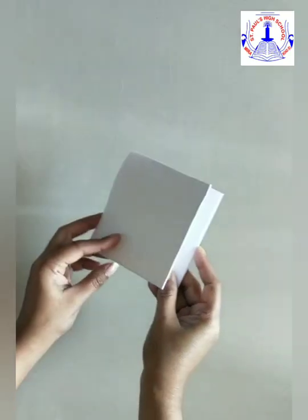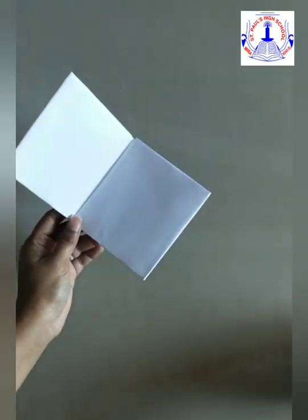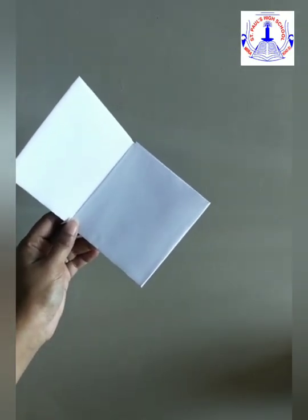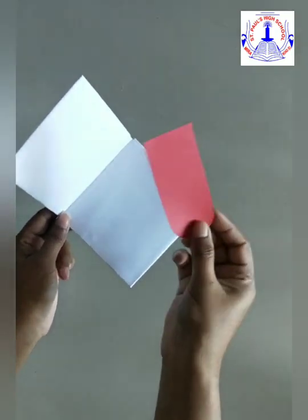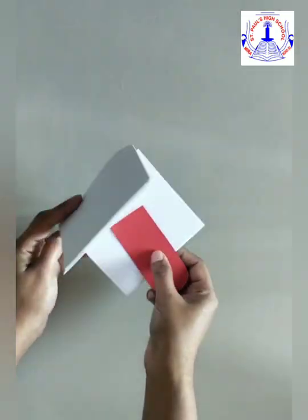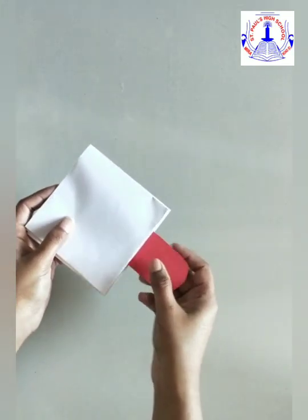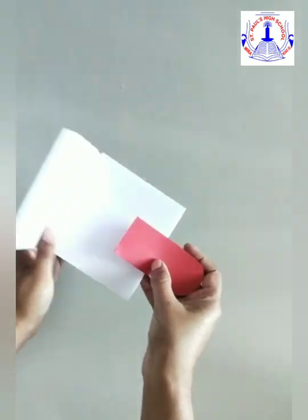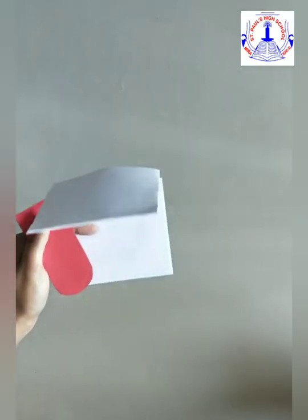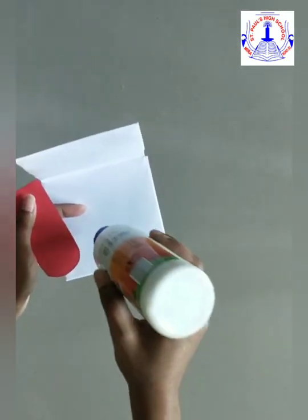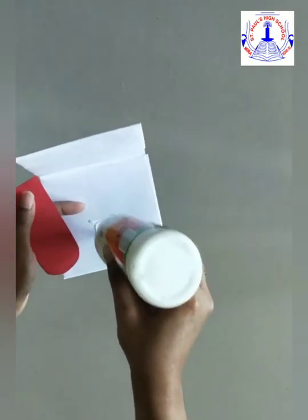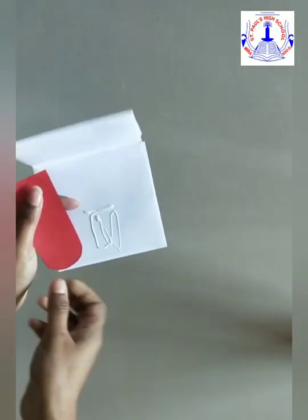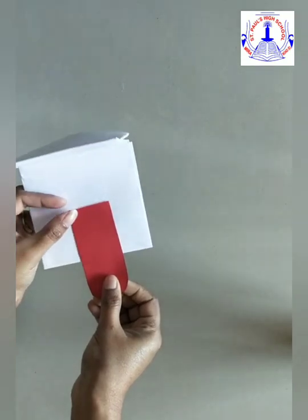Now once this much is done, take the dog's tongue. We're going to stick it like this. So now take a glue again, apply it, and in the middle we are going to stick it.